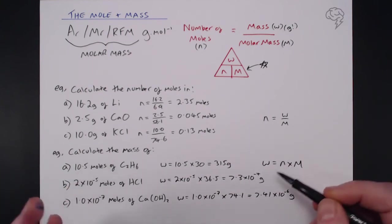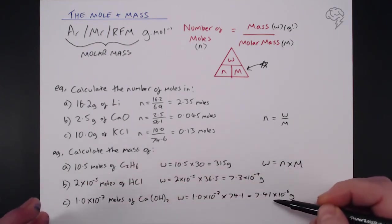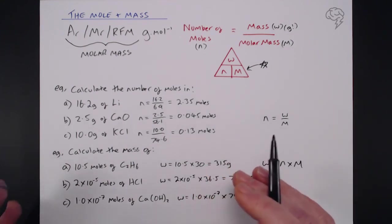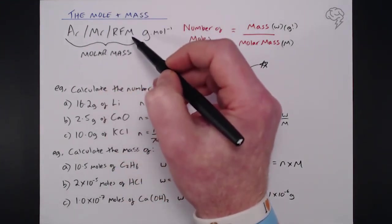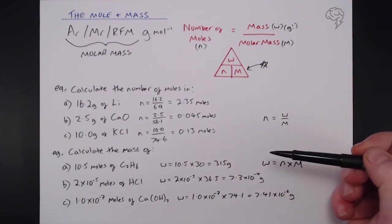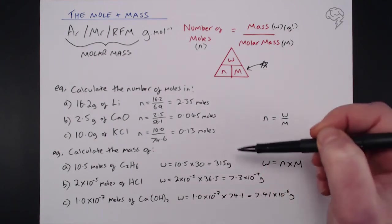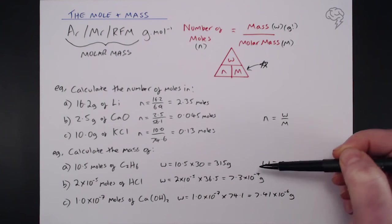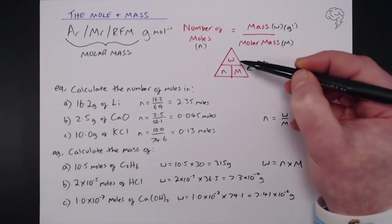So there is a common sense check here, because if you are dealing with small numbers of moles you're going to get small masses. And like I've said in previous tutorials, you've got to get your AR, MR and relative formula masses correct, otherwise these calculations are going to end up incorrect. So make sure, double check, even triple check your MR, AR and RFM values before you plug them into these calculations.